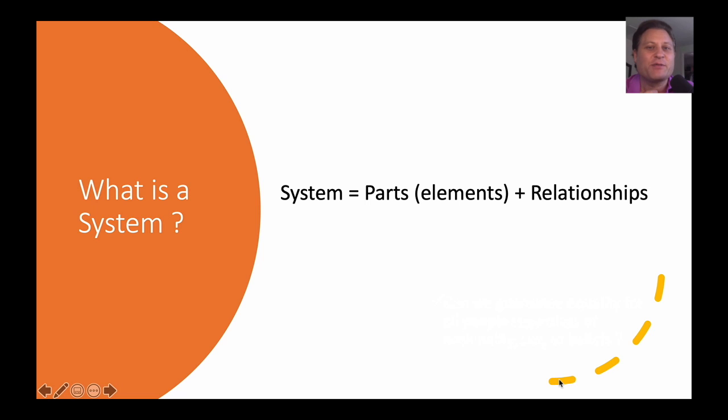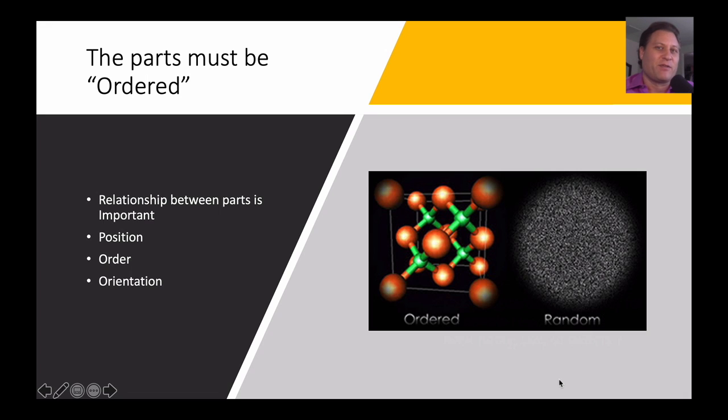So if it isn't already obvious to you, really what we're talking about on the most fundamental level is that a system is really parts or elements that come together in a certain set of relationships. Now I'm going to stress this because it's really important to understand. It's not just the parts that make the system, but it's how those parts are brought together through relationships. The parts must be ordered. What that simply means is that they're not randomly thrown together in some fashion. The relationship between parts is important. This could be the position or the ordering or the orientation. All has specific parts in specific places. And that's as important as the actual parts themselves.